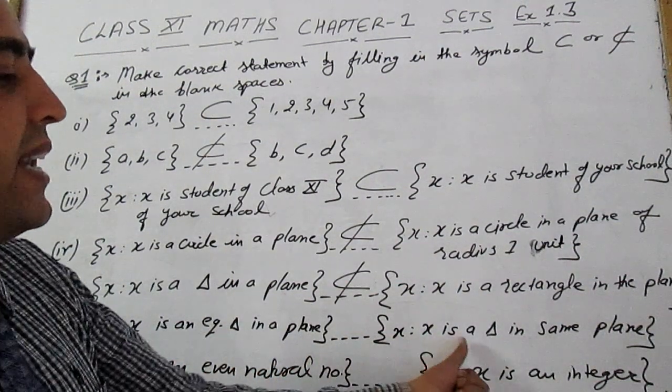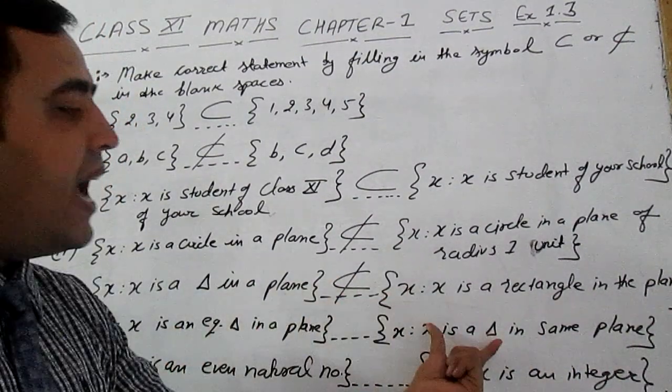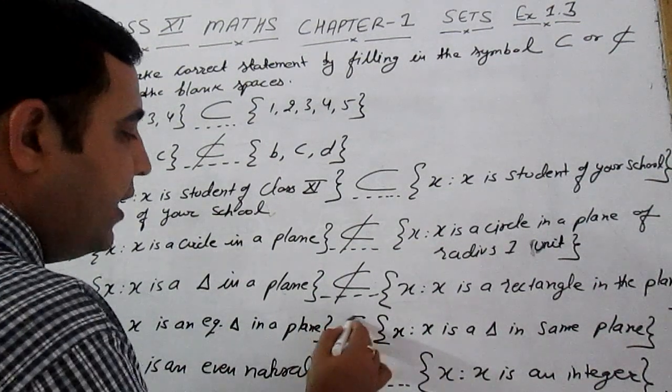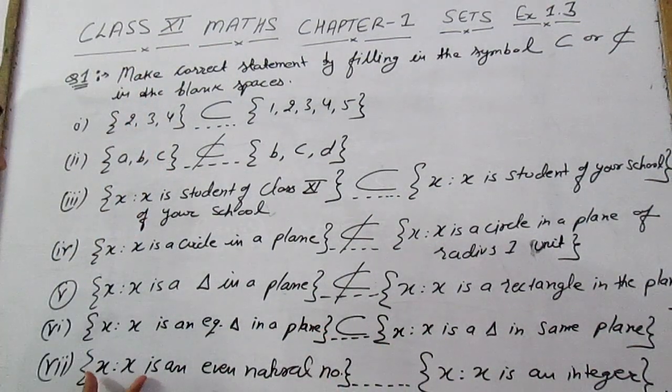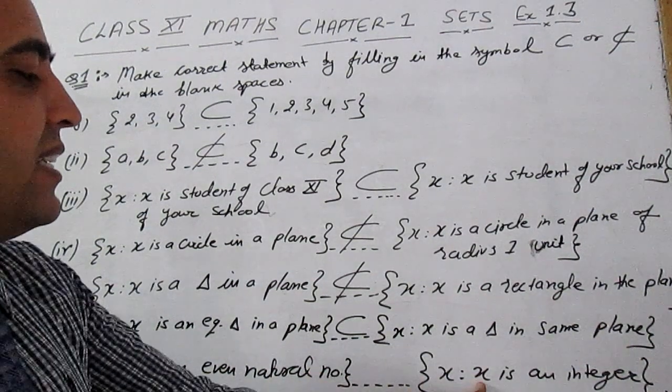x is such that x is an equilateral triangle in the plane; x is such that x is a triangle in the same plane. Because an equilateral triangle is a type of triangle, therefore it is a subset.